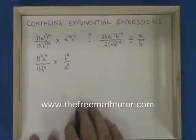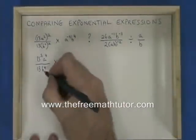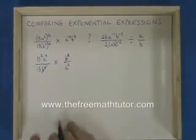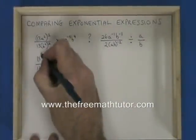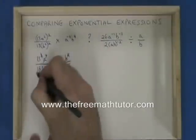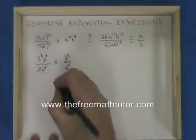Now when I multiply, I can do some cancelling. The b to the 4s cancel. The a to the 4s cancel. And one of the 13s on the top cancels with the 13 on the bottom. All that's left is 13.